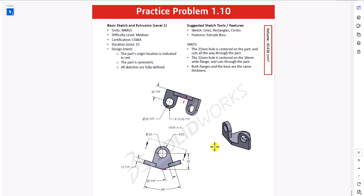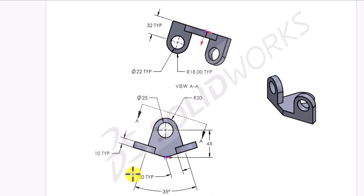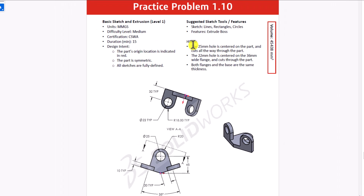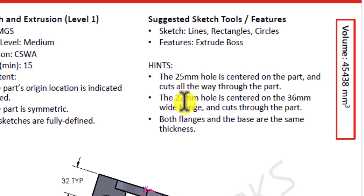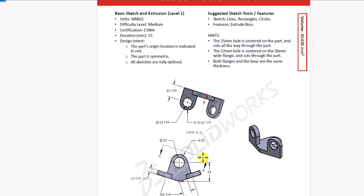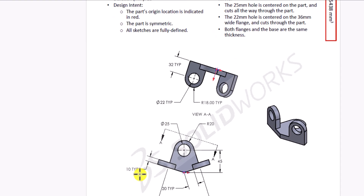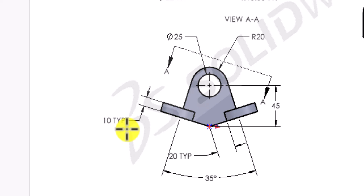Looking at this question, we have different views. We have the front view with some information shown in it, and we also have view AA, which is looking at this geometry from the top view on the angle plane. There are three hints provided. Hints 1 and 2 are easy to understand from the geometry — the holes you see are centered. We have a 22 millimeter hole on the flanges and a 25 millimeter hole in the front view, and they are all centered.